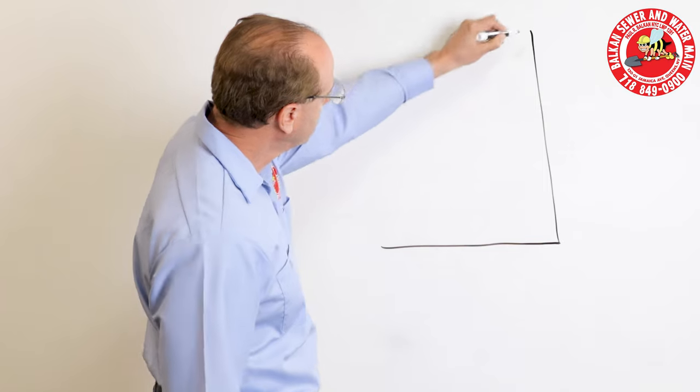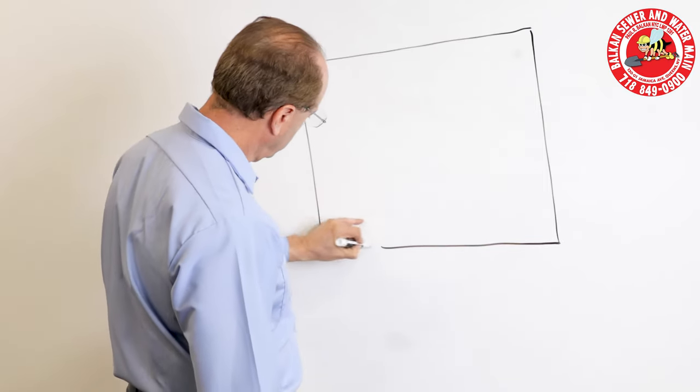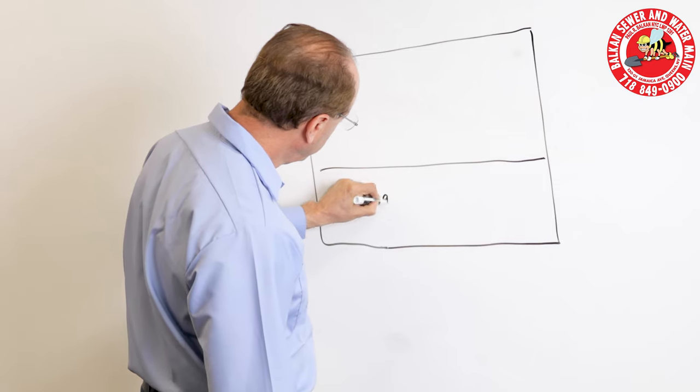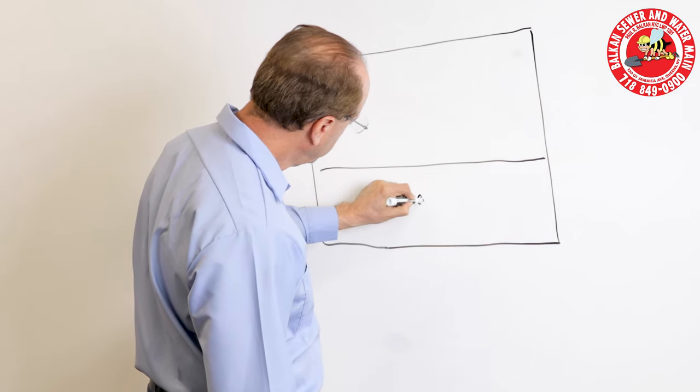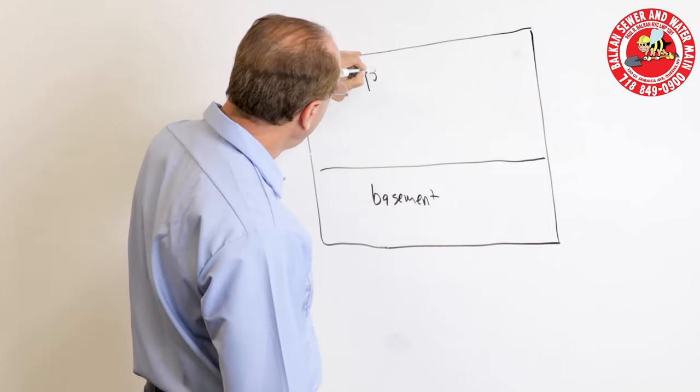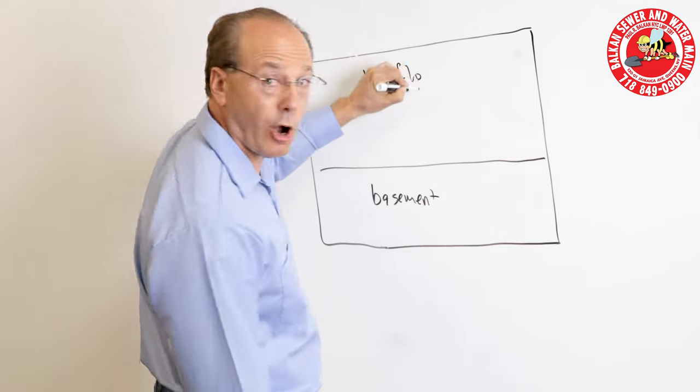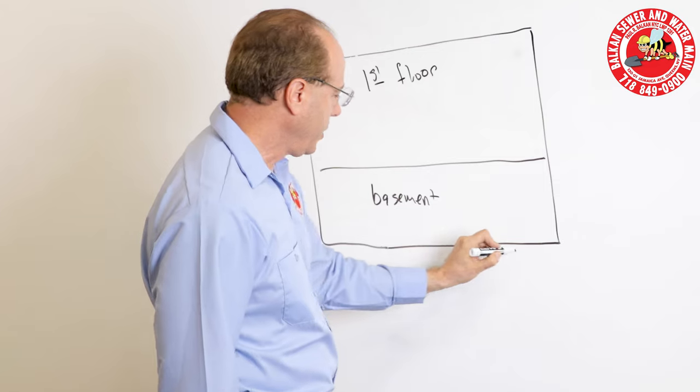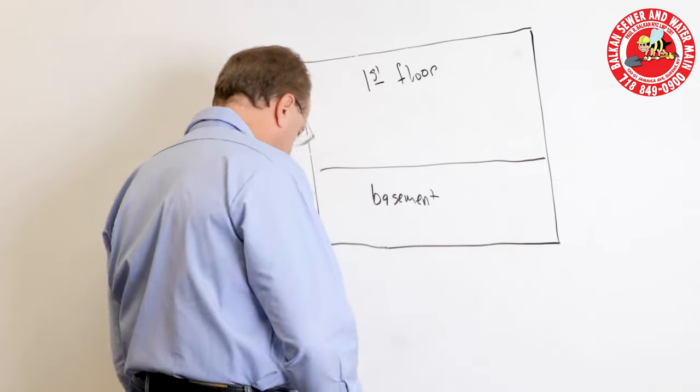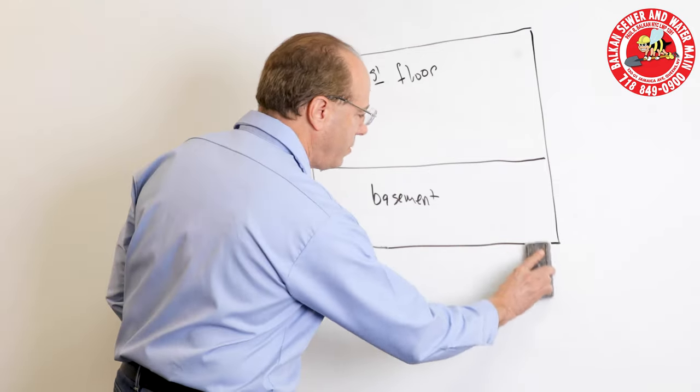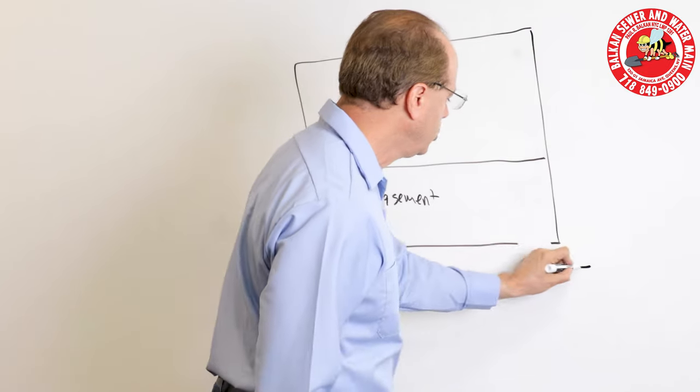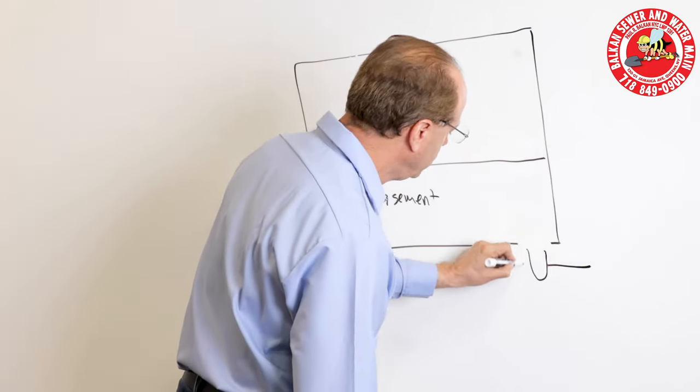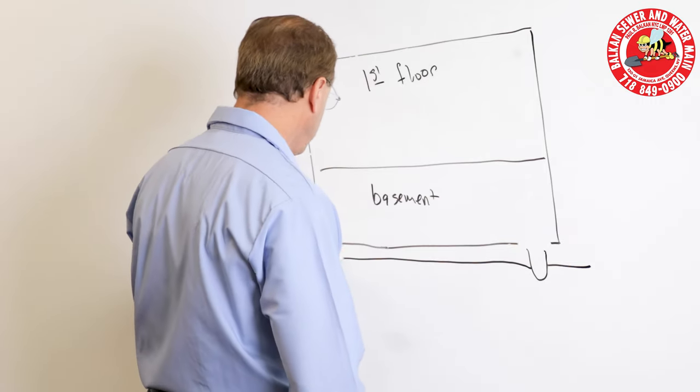So, if this is your home, and this is your basement, and here's your first floor, you're going to excuse my artwork, it might not be the best. You have typically a pit, you have your sewer coming out, you have a house trap that's U-shaped, you have your underground plumbing.